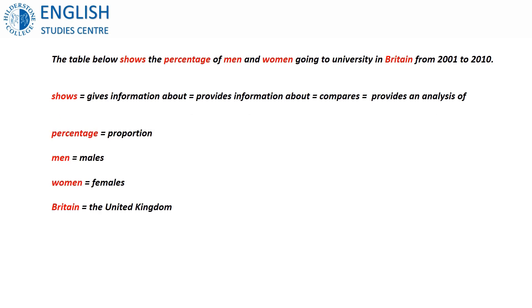It's also easy to change other words. We can change 'percentage' to 'proportion.' We can change 'men' to 'males,' 'women' to 'females.' We can change 'Britain' to 'the United Kingdom' — notice that it's 'the United Kingdom,' that's important. And finally, the time phrase at the end: 'from 2001 to 2010' we can change to 'between 2001 and 2010.'